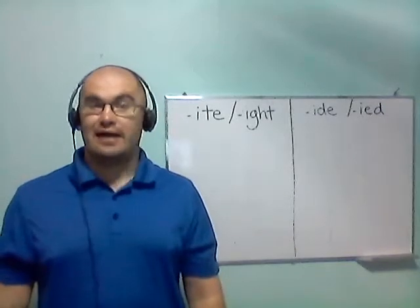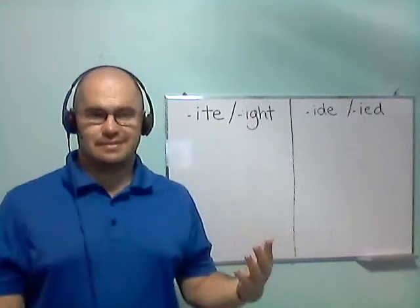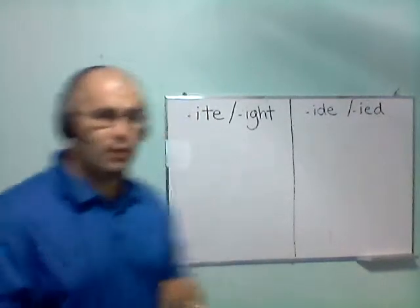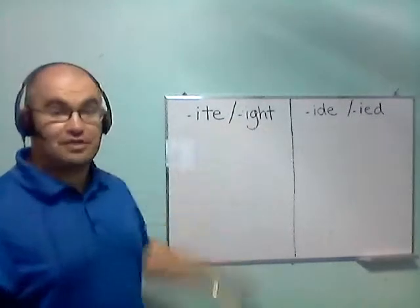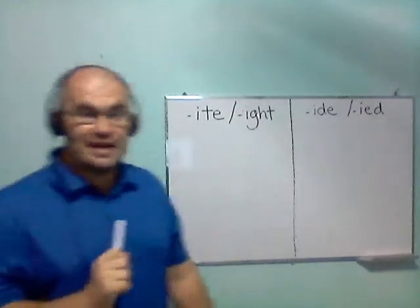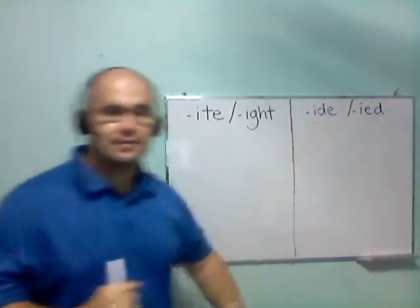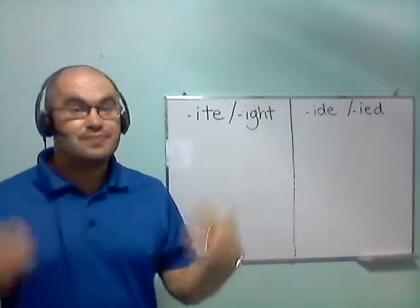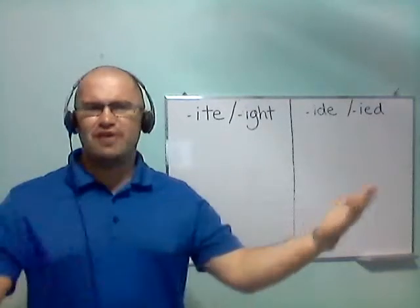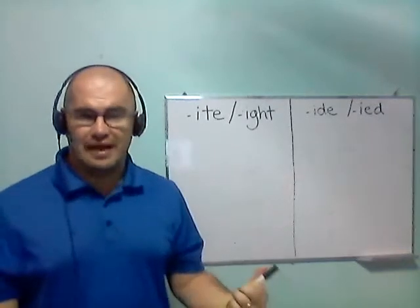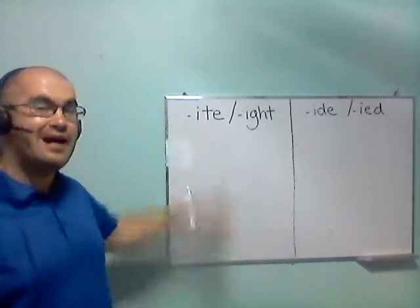And the long I sound is I. So we are going to learn two different long I endings today. The first one we will learn is I-T-E. There are a few different spellings for I-T-E. And the other sound we'll learn is I-D-E. So they are two very common ending sounds. So first, let's go and we'll think of some words with these sounds. How about first, -ite, with I-T-E.